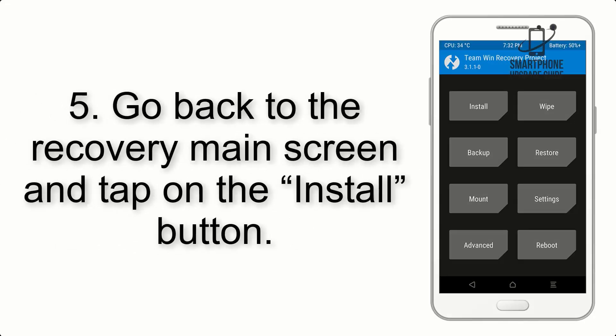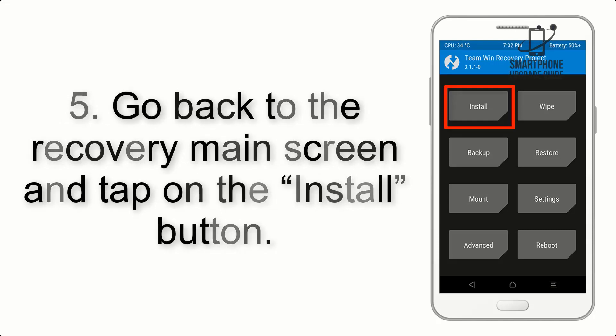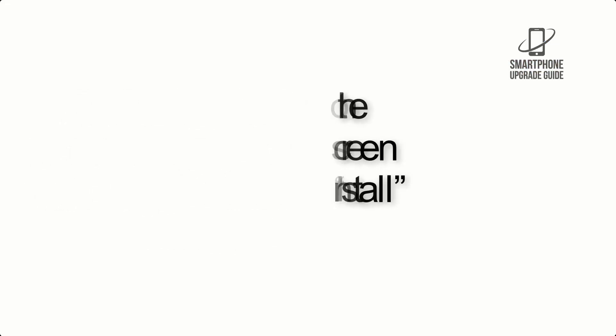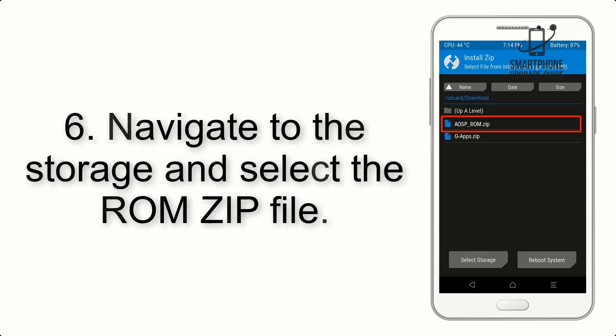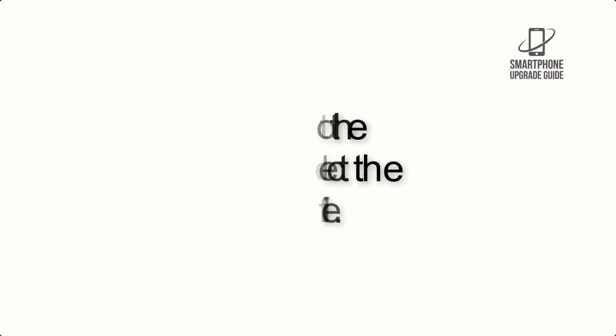Step 5: Go back to the Recovery main screen and tap on the Install button. Step 6: Navigate to the Storage and select the ROM ZIP file.